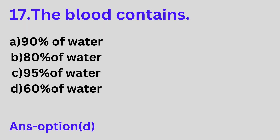Question 17: The blood contains A. 90% water, B. 80% water, C. 95% water, D. 60% water. Option D is the correct answer. The blood contains 60% water.